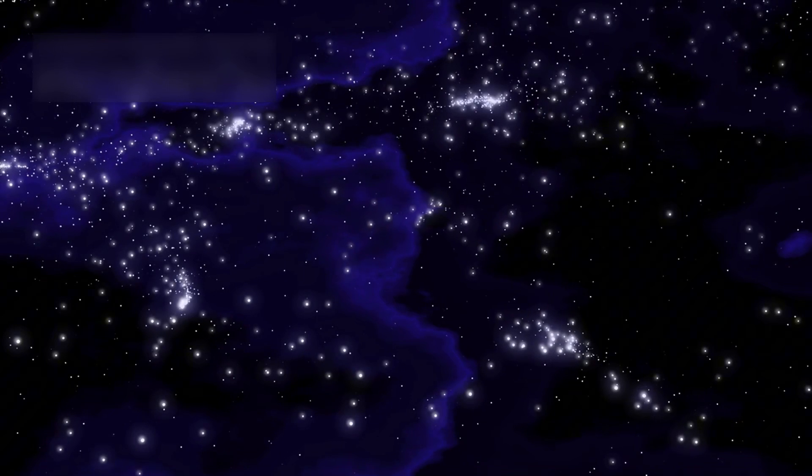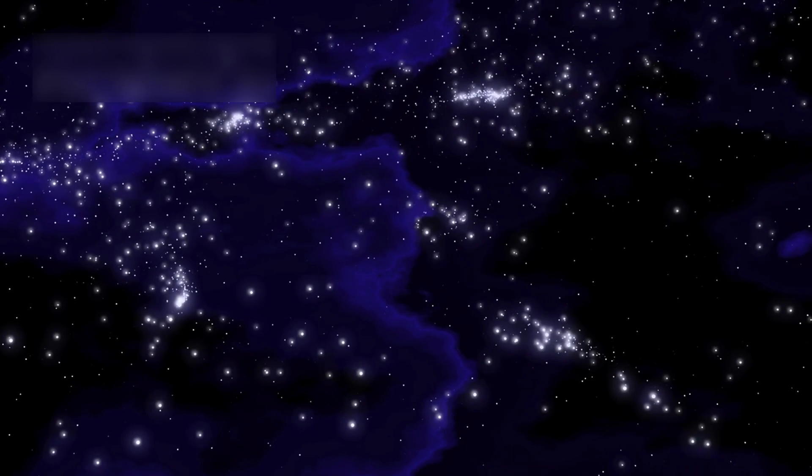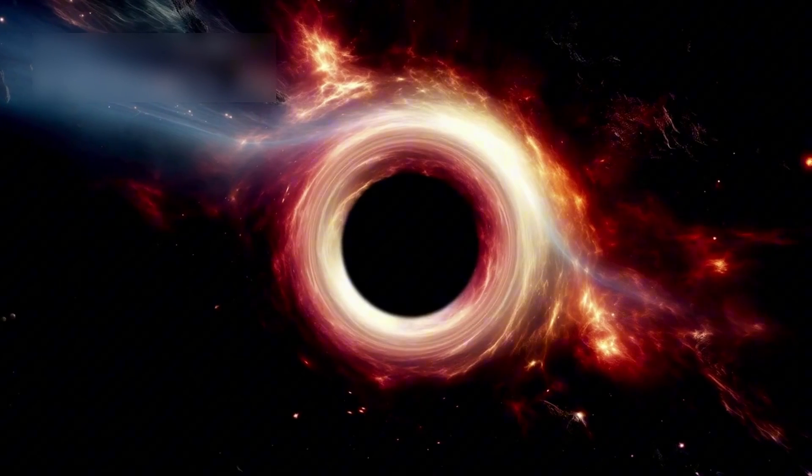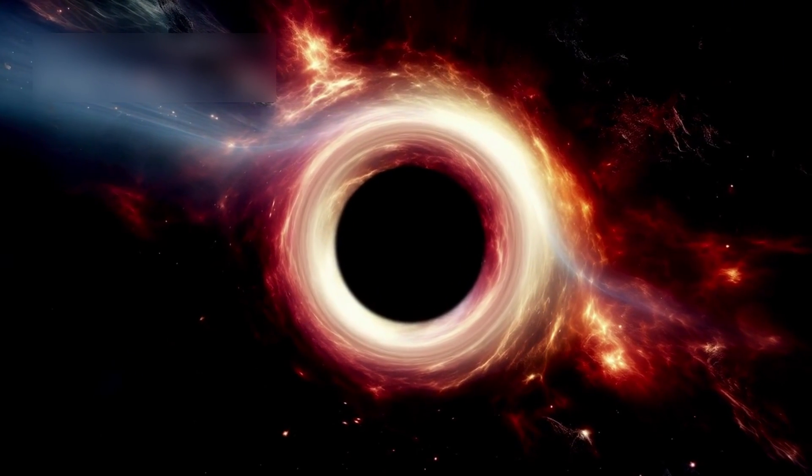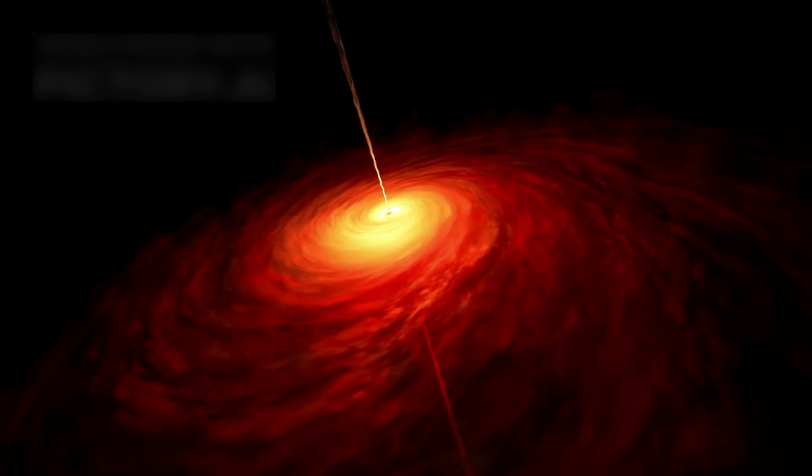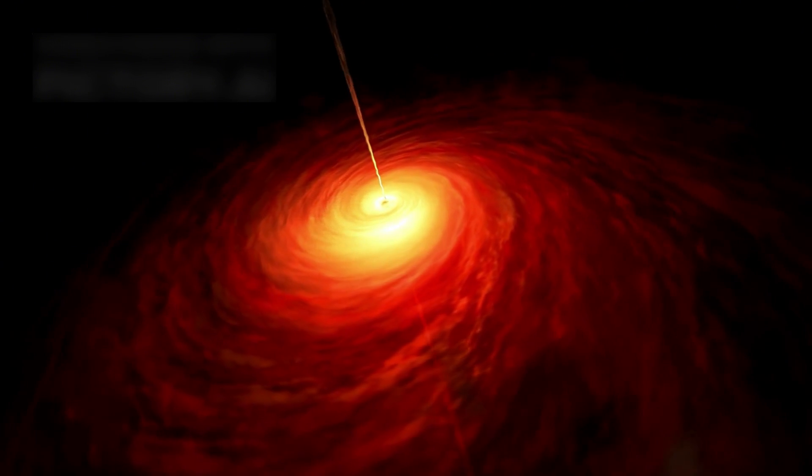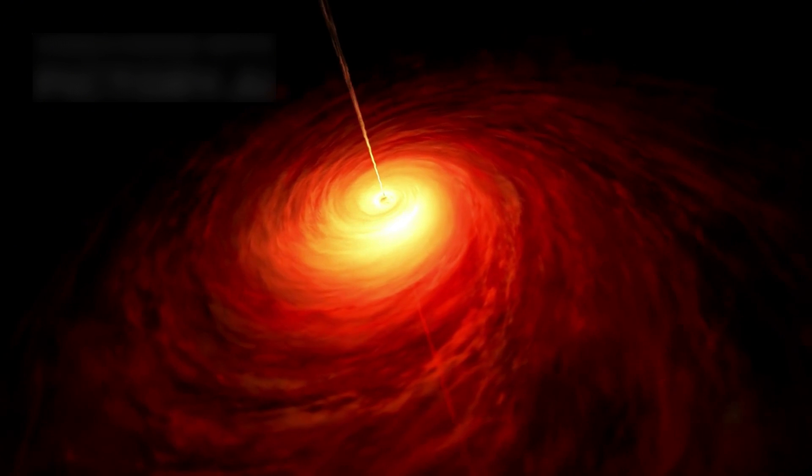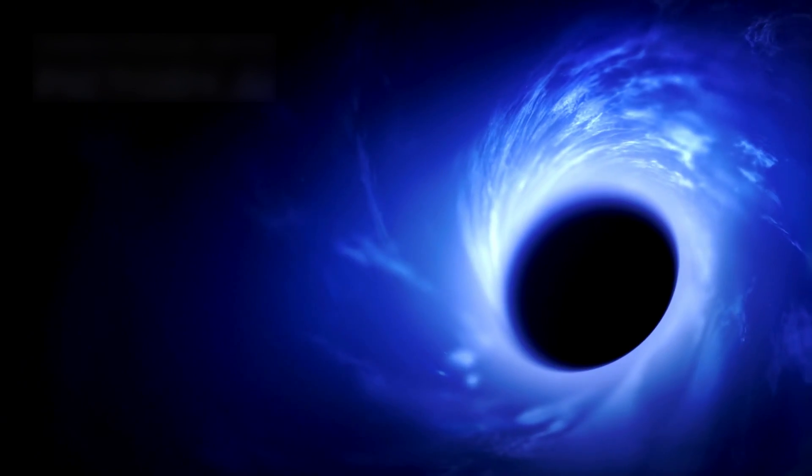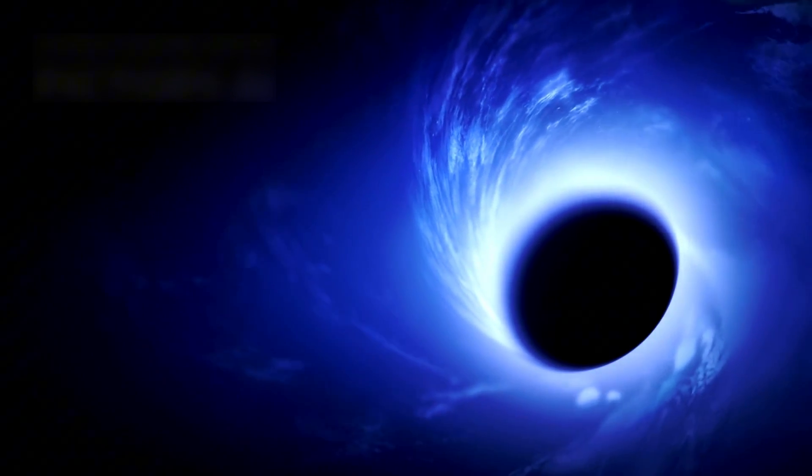And then came another surprise: enormous black holes. One galaxy had a black hole more than a billion times the mass of our sun. Black holes are supposed to grow slowly, but this one was already massive when the universe was still young. Even the best computer models can't explain how it grew so quickly.